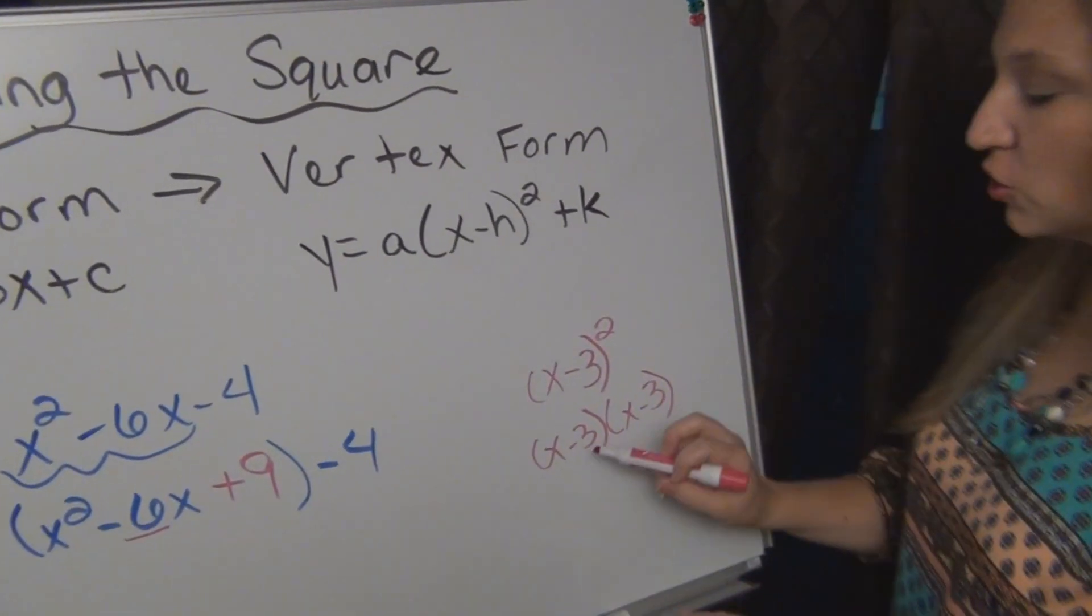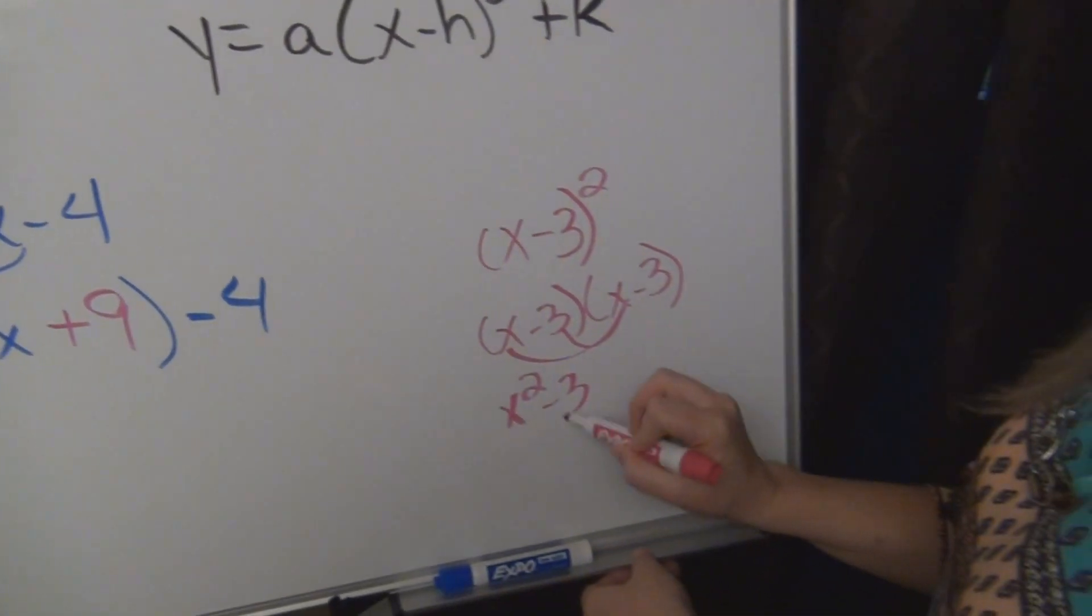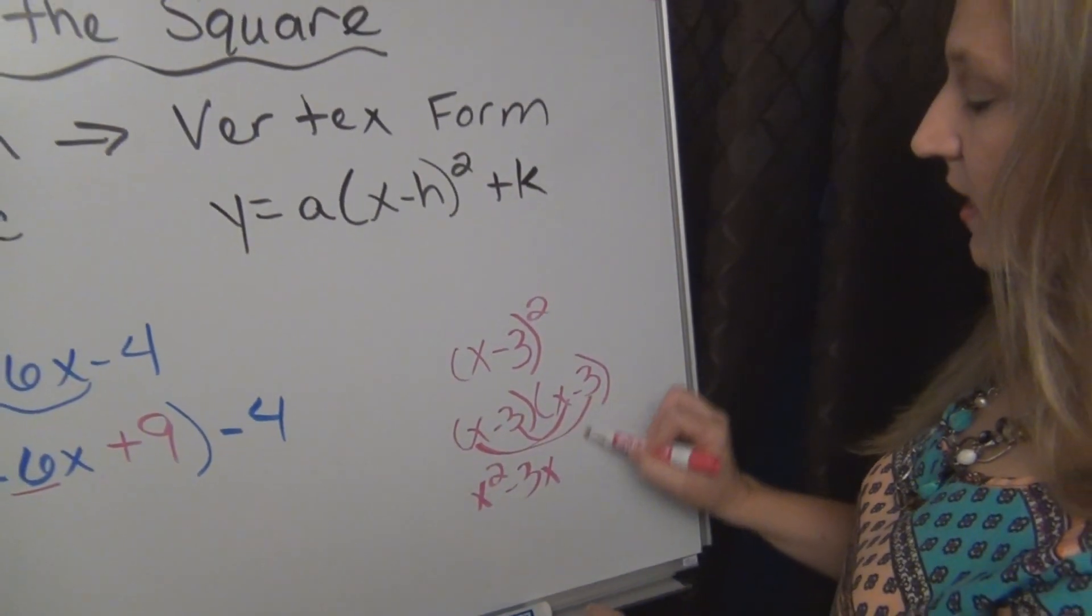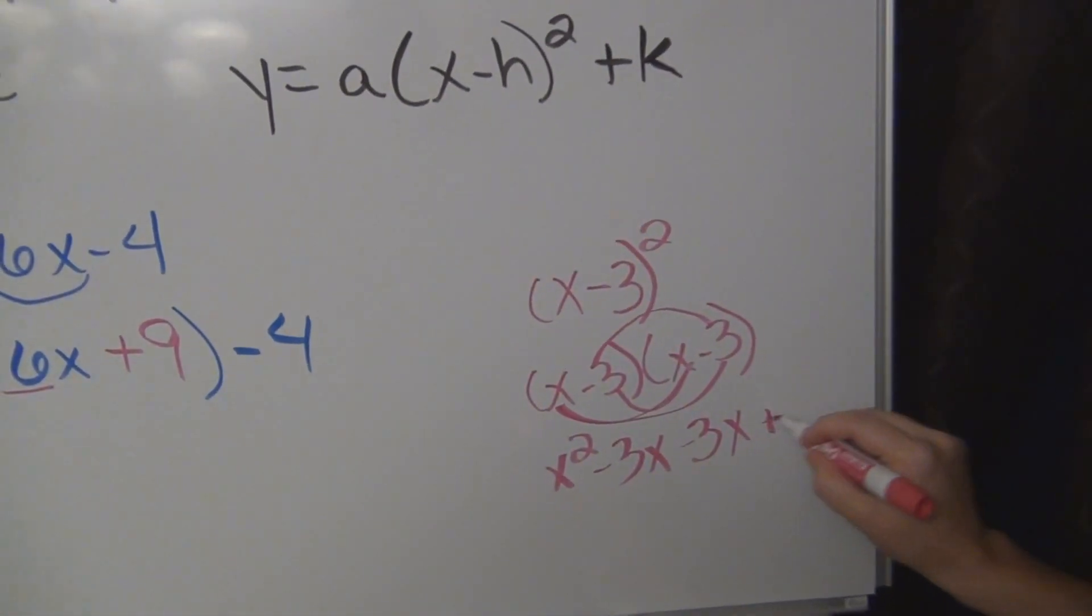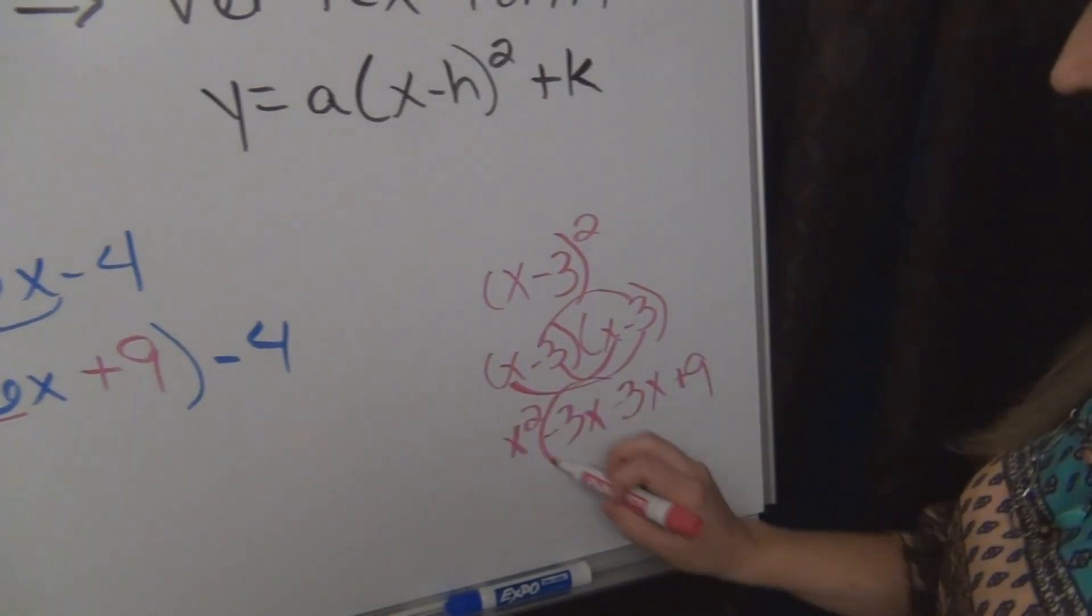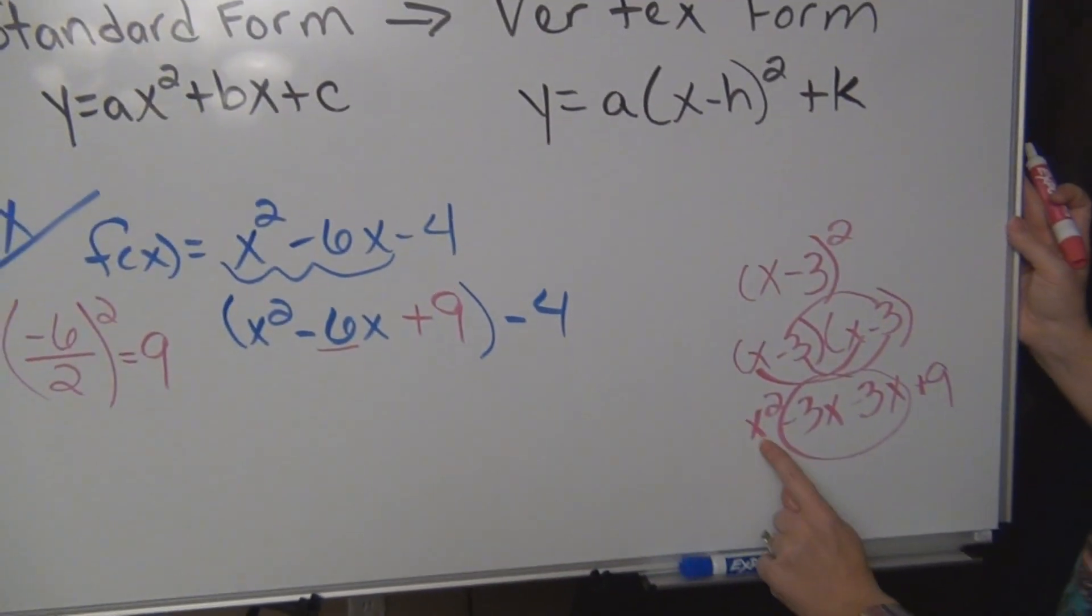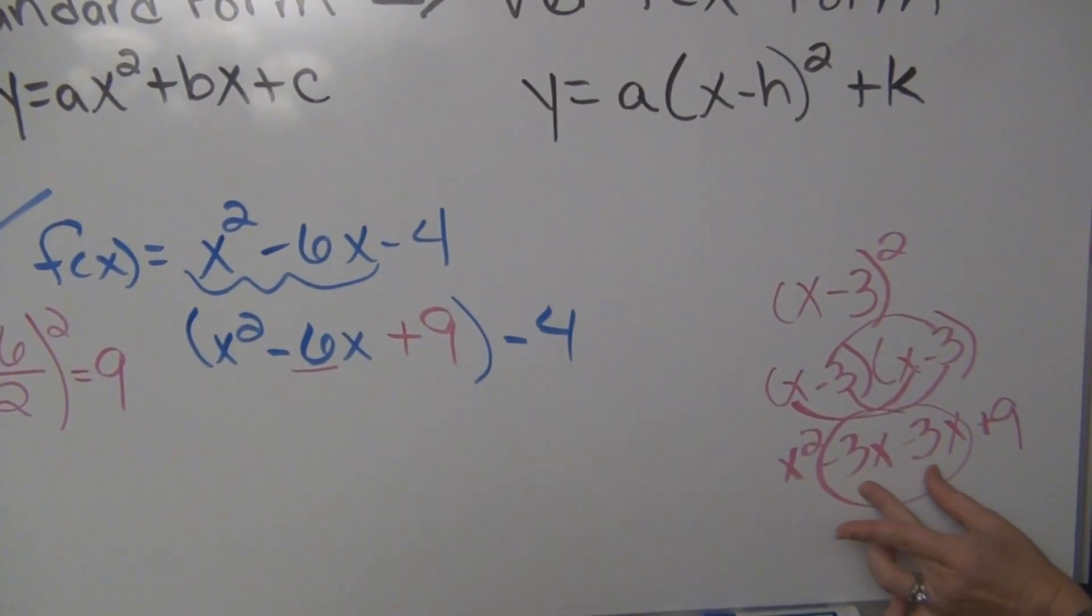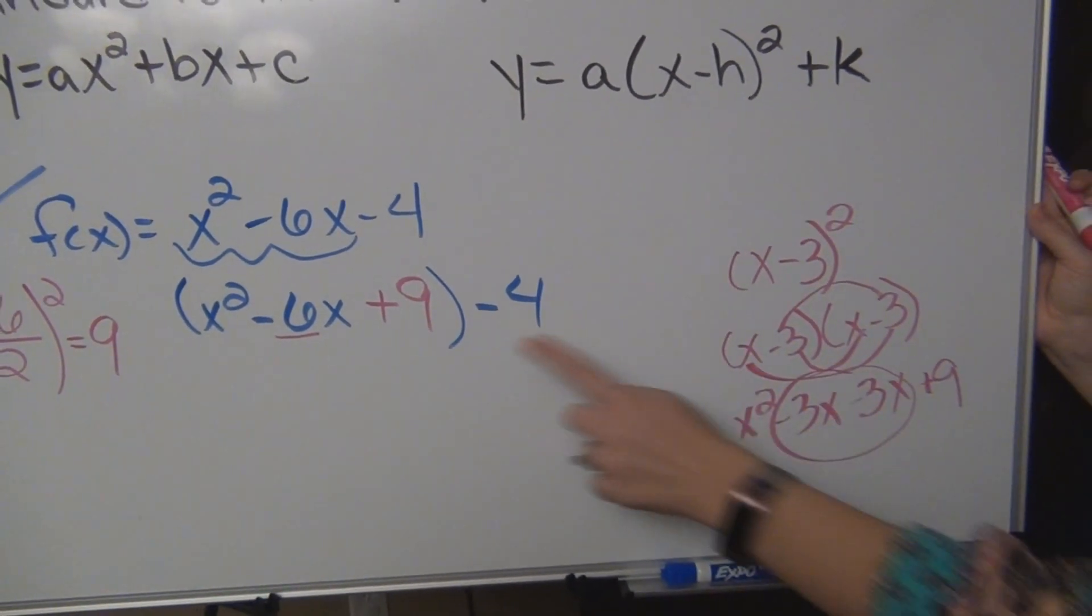So if I was going to multiply this out, x times x is x squared. I have a negative 3x and another negative 3x, and then negative 3 times negative 3 gives us a positive 9. When I combine my like terms, you will notice I have the polynomial here. x squared, negative 3x and negative 3x makes negative 6x, and the 9.